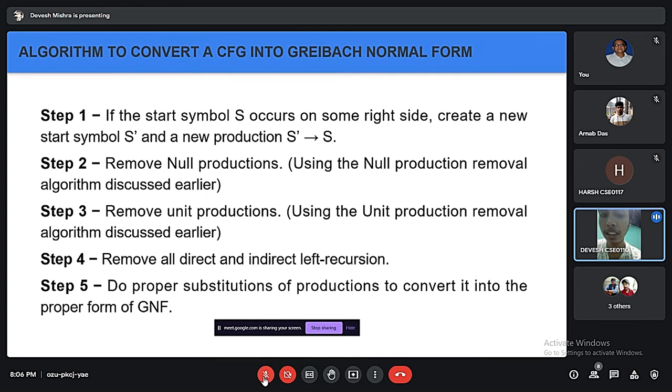We'll briefly discuss the algorithm to convert a CFG into Greibach Normal Form. Step 1: if the start symbol S occurs on the right side, create a new start symbol S' and a new production S' to S. Step 2: remove null productions using the null production removal algorithm discussed earlier. Step 3: remove unit productions using the unit production removal algorithm. Step 4: remove all direct and indirect left recursion. Step 5: do proper substitutions of productions to convert it into the proper form of GNF.